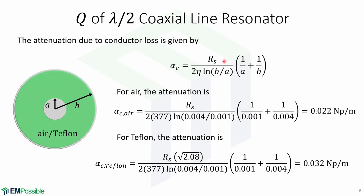Having found the surface resistivity, we can find the attenuation due to conductor loss, which is given by this expression for a coaxial transmission line. We first calculate the attenuation for air, which gives this result. Now we calculate the attenuation for Teflon, and the result is this number.